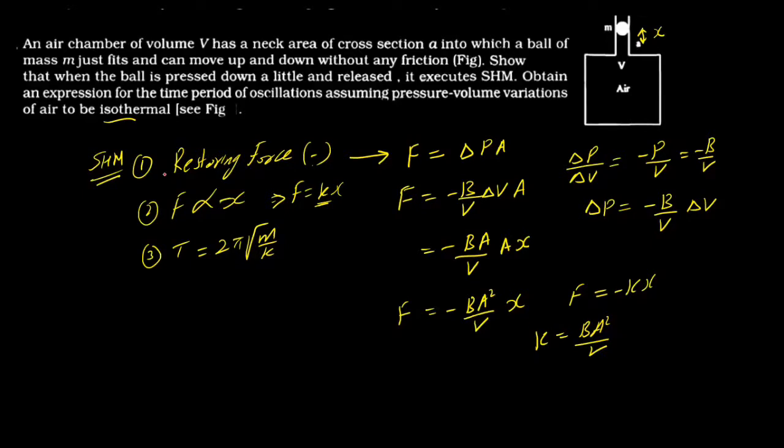K is found. And the condition is satisfied. Now we find the time period. Time period will be 2π root of M by K. M is fixed and K is P A squared divided by V. So the time period is obtained. This is the expression for the time period.